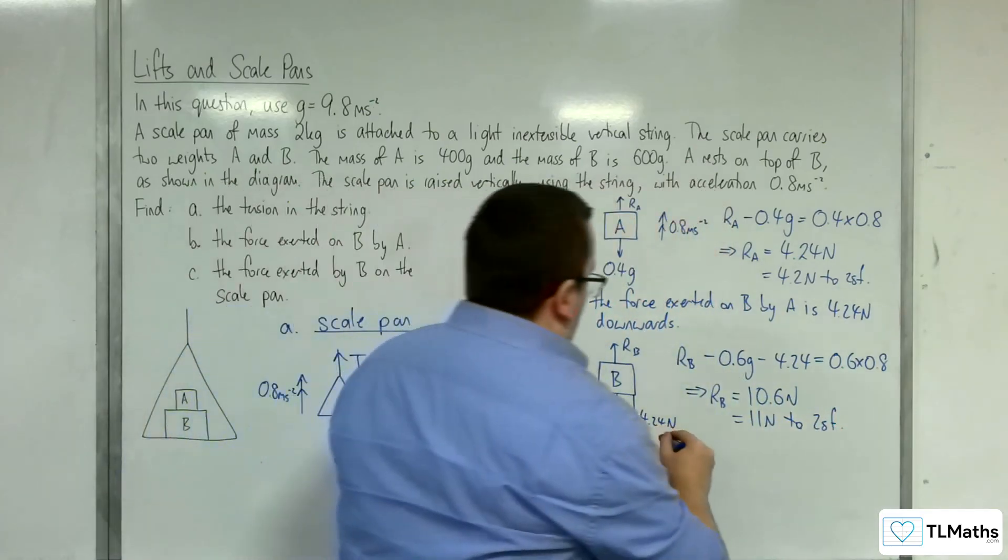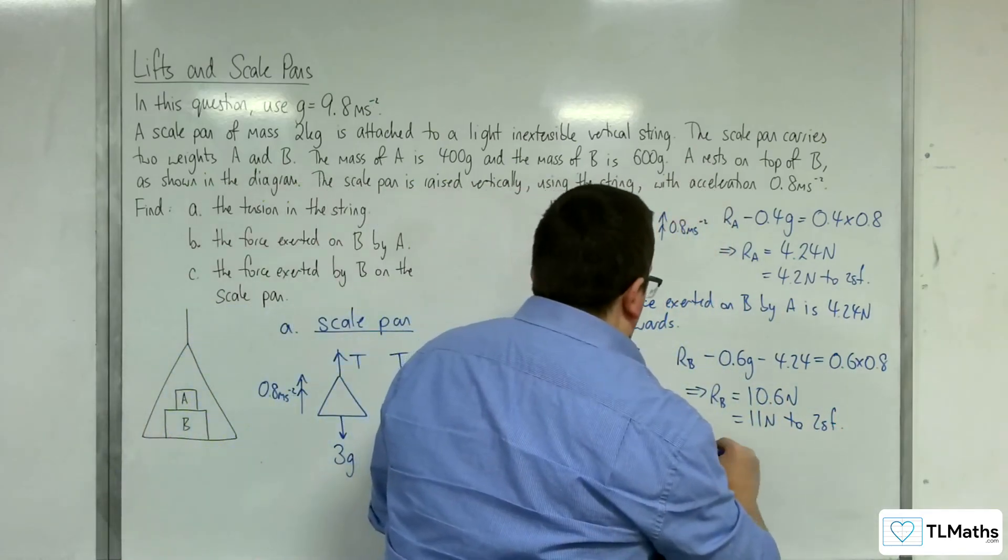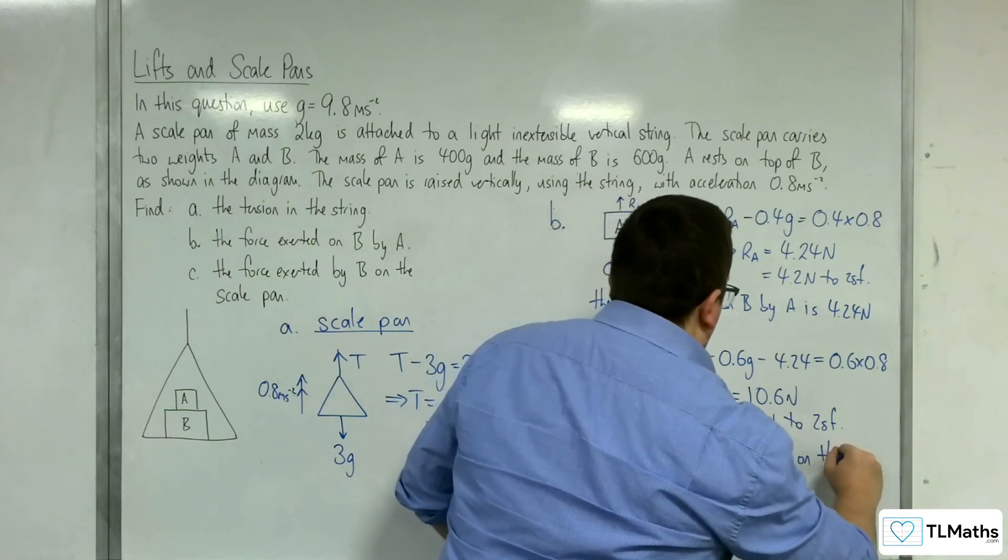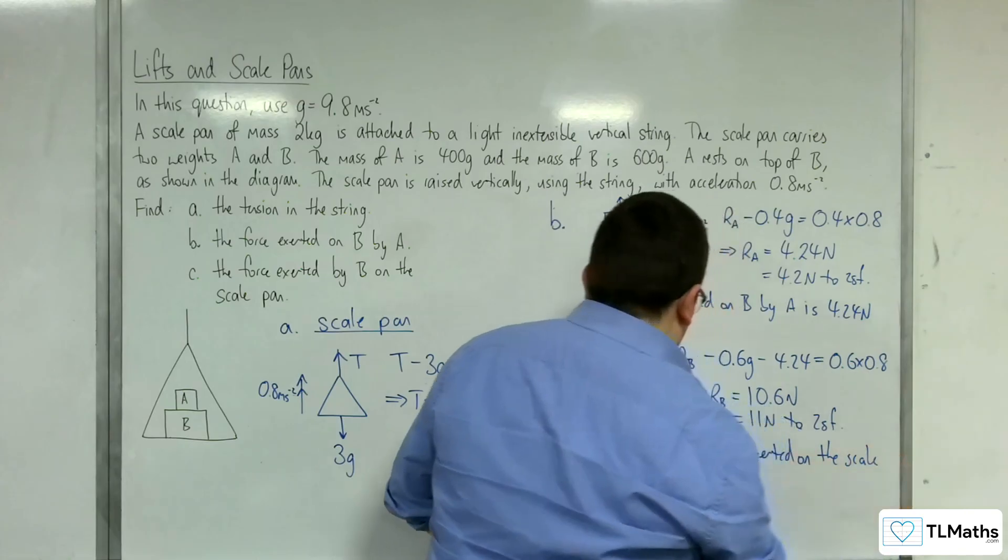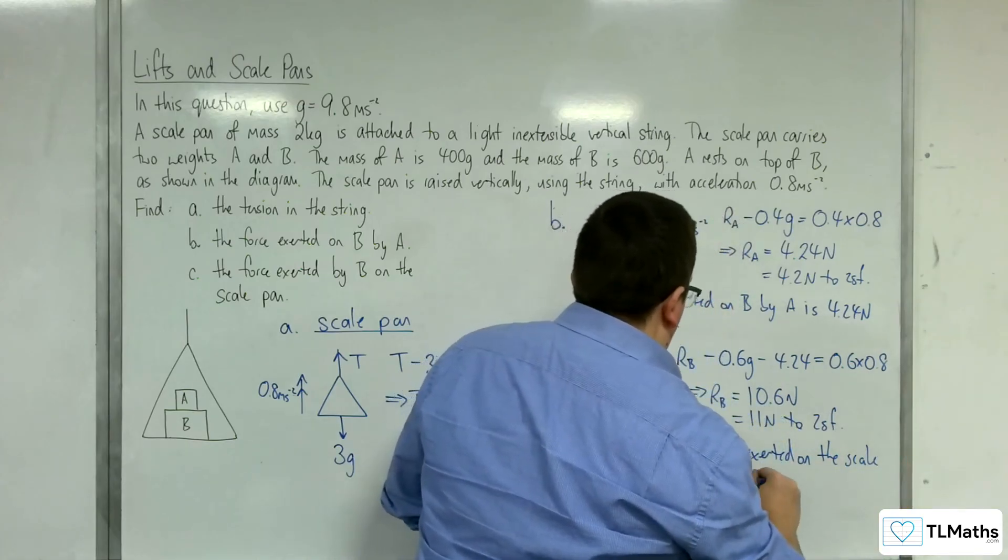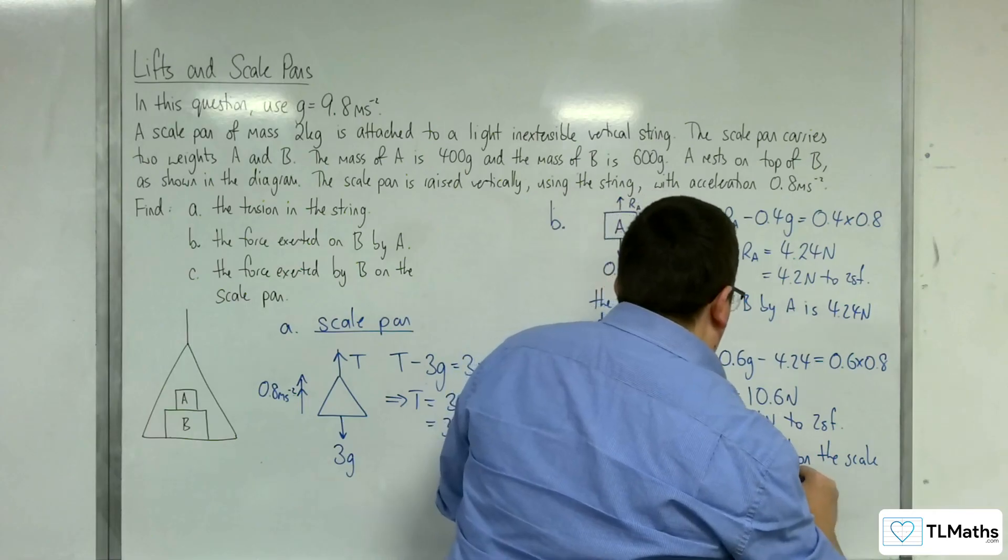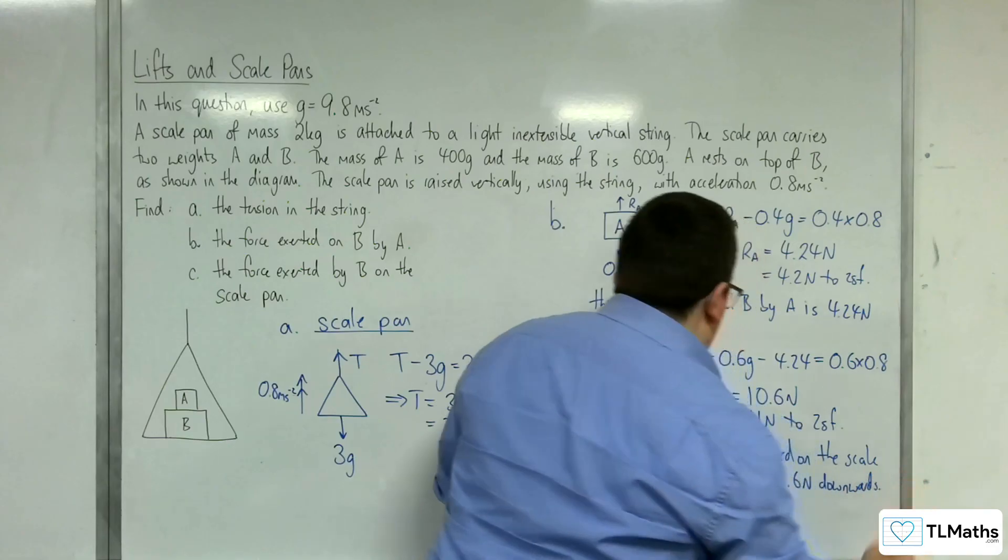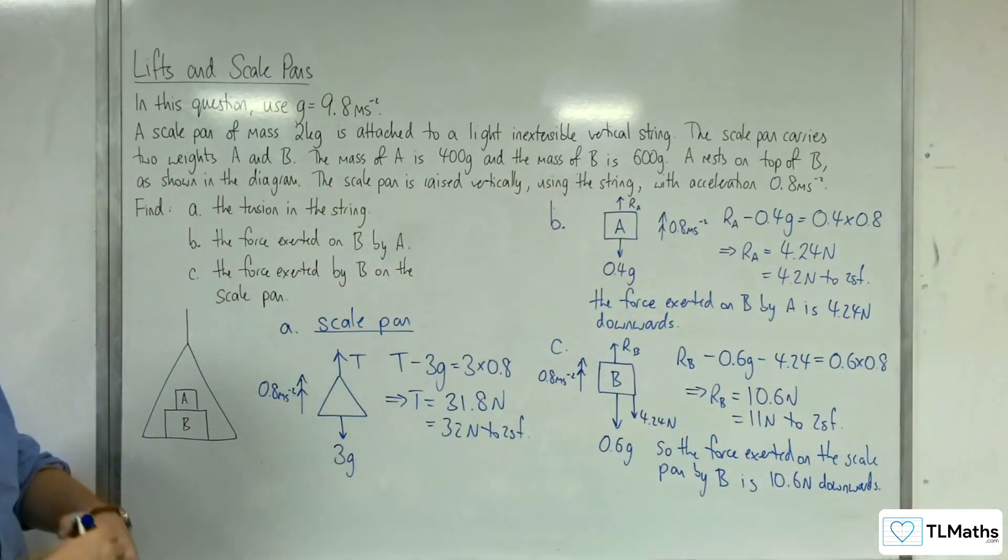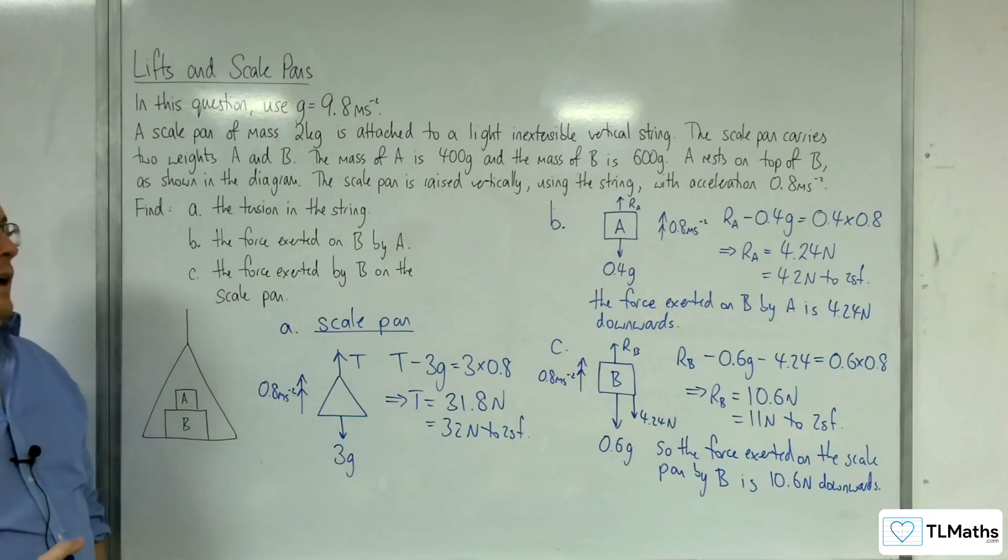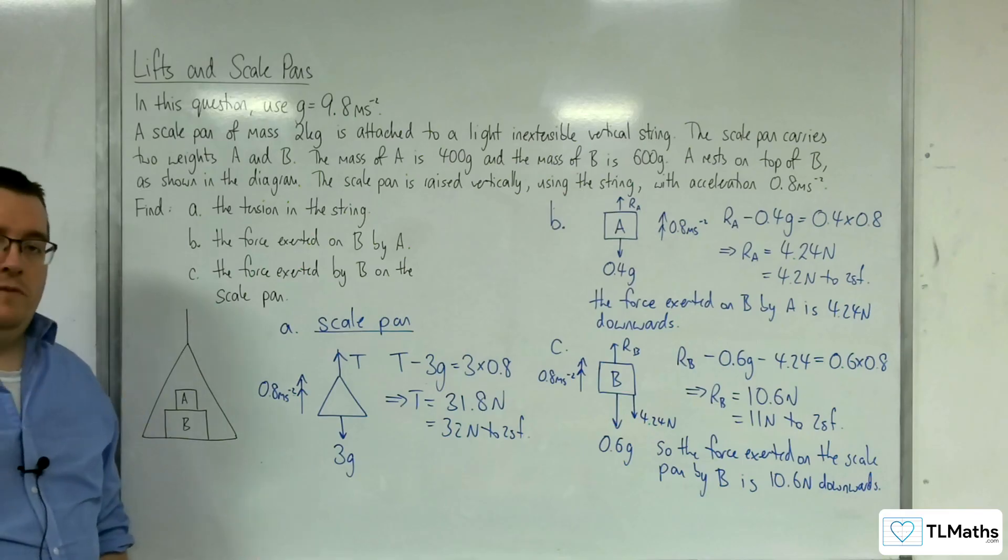So, the force exerted on the scale pan by B is 10.6 newtons downwards. So, a very similar problem to what we did before. Hopefully, you've been able to have a go at this one, given that you've watched the previous one.